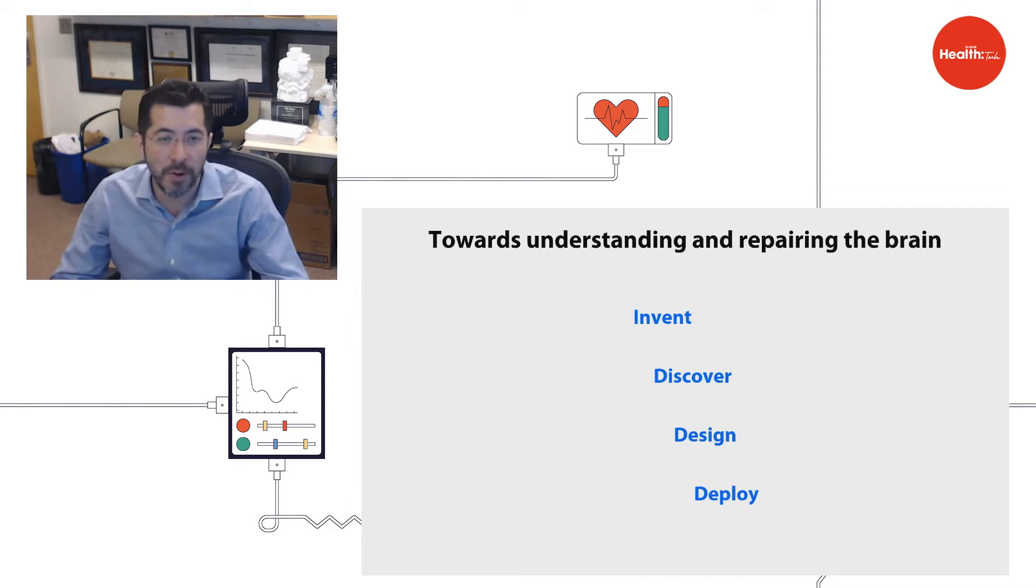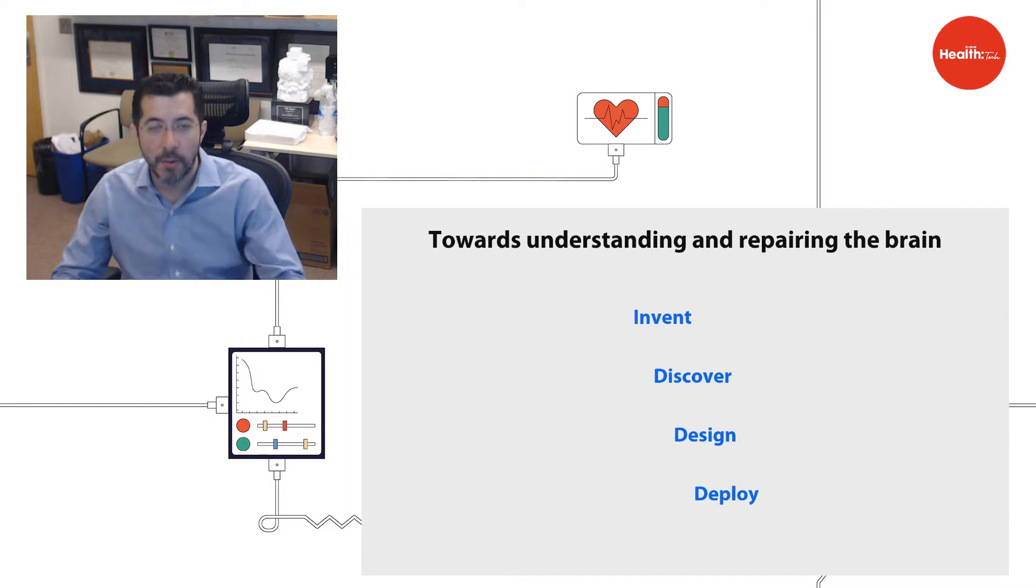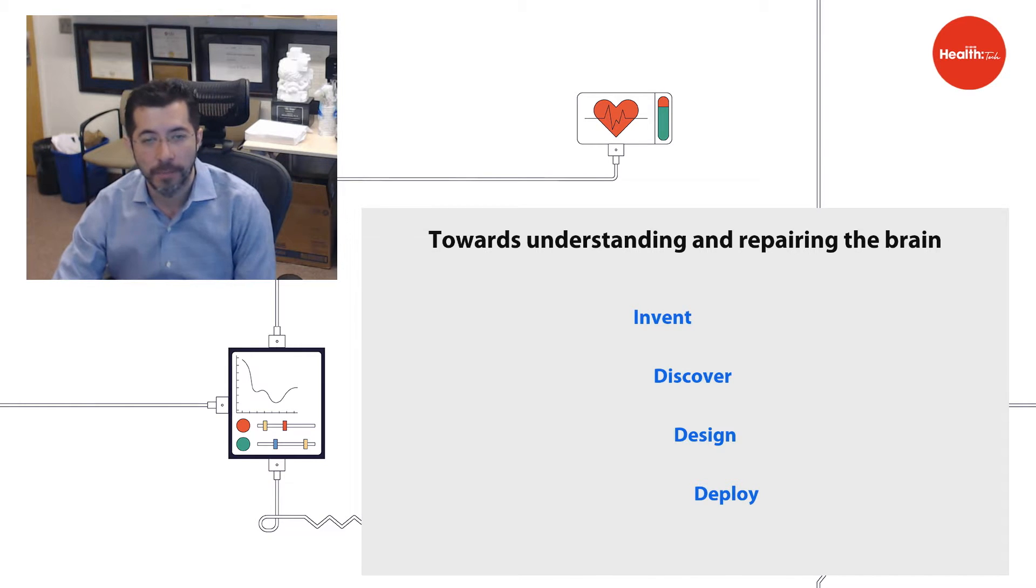So we're putting forth a new model where we invent new tools to unveil the underlying science. We help thousands of groups discover what's going wrong in the brain. And then we help people design practical implementations of the technologies that result from those discoveries and then deploy them into the world. Now, why is it so difficult to understand the brain?